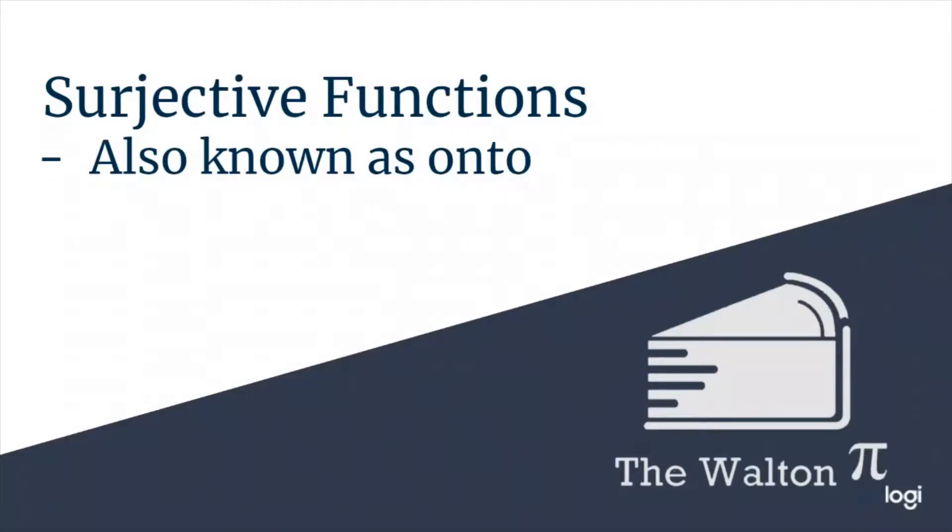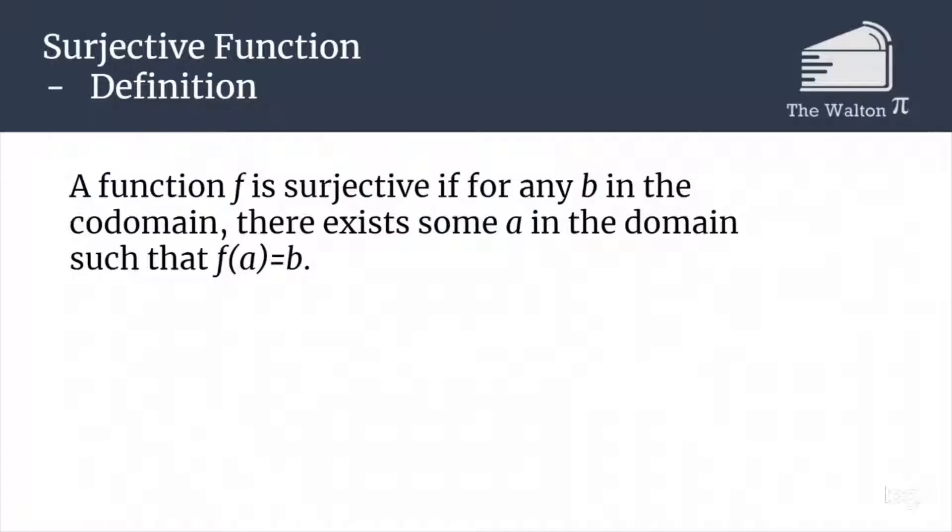A second type of function is what's called a surjective function, sometimes called onto. A function is surjective if for any b in the codomain, there exists some a in the domain where f(a) equals b, meaning that no matter what I pick in my set B, there's always something that will map to it.